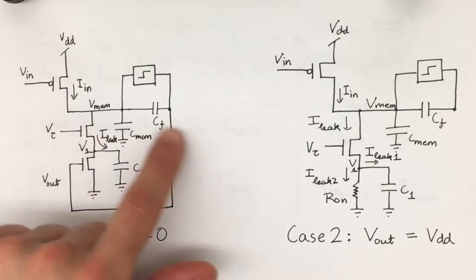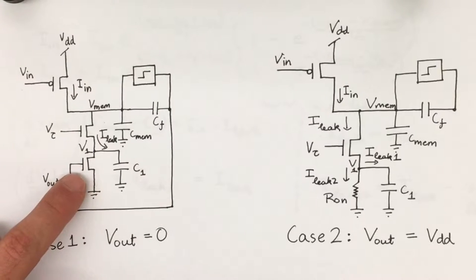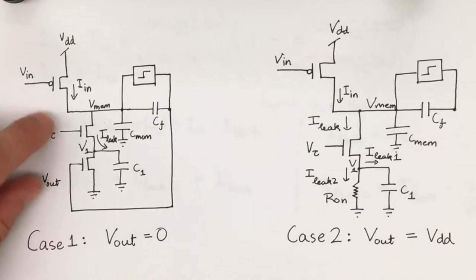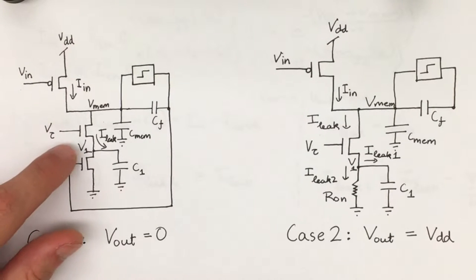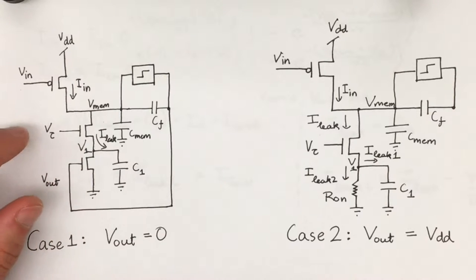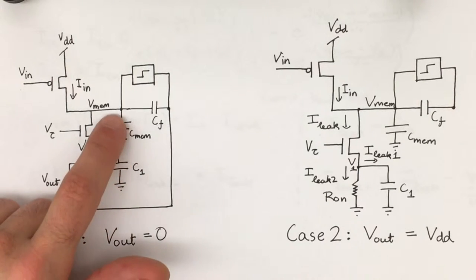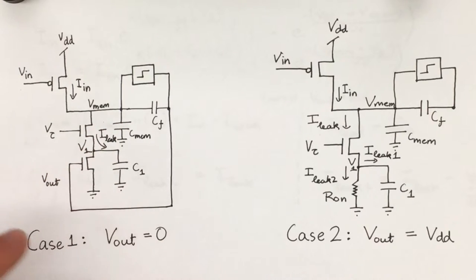The output controls a leakage branch, which is secondly controlled by some bias voltage on the NMOS. This allows the charge to drain from Vmem so that a neuron can effectively reset itself.